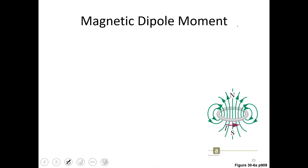A current loop has a magnetic dipole moment. The magnetic dipole moment uses the letter mu — not mu-naught, which is permeability, but just plain mu. For a current loop with n turns, the magnetic dipole moment is n times I times A, where A is the area described by the current loop. That area could be circular, rectangular, or any other shape that the current traces a path around.